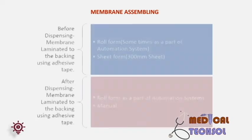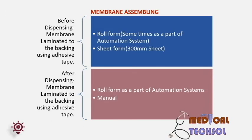Membrane assembling can be done in two different ways. First, before dispensing or coating: the membrane is laminated to the backing using adhesive tape, either by an automation system in roll form or in 300 mm sheet form. Second, after dispensing or coating: the coated membrane is laminated to the backing using an automation system, semi-automation, or manually by hand. Consistency will not be maintained in manual lamination. Sometimes a dedicated machine is used for lamination.